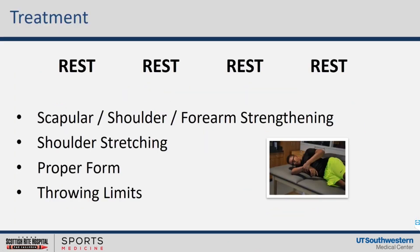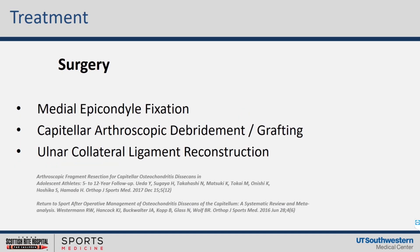For overuse, the answer is always rest — change the pattern, decrease the stresses. We put these kids into forced rest, then do scapular, shoulder, and forearm strengthening, shoulder stretching, work on form, and work on throwing limits. Surgery when needed: we can address avulsive changes in the medial epicondyle, capitellar osteochondral problems, and ulnar ligament reconstruction. These are big surgeries that put kids out for quite a while, and most literature shows kids have trouble returning to the same level.